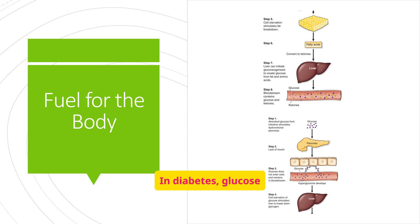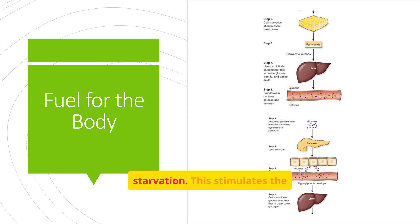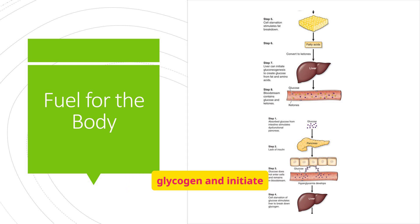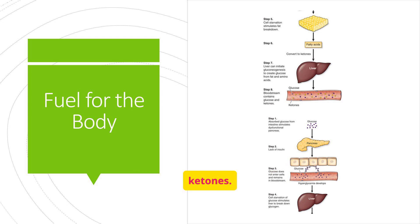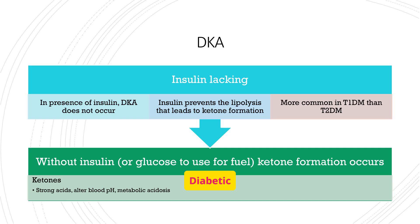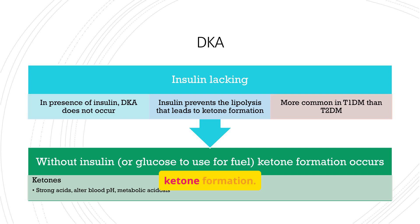In diabetes, glucose doesn't enter cells effectively, leading to hyperglycemia and cell starvation. This stimulates the liver to break down glycogen and initiate gluconeogenesis. Fatty acids are converted to ketones, resulting in a bloodstream containing both glucose and ketones. Diabetic ketoacidosis, DKA, occurs when insulin is lacking, leading to ketone formation.